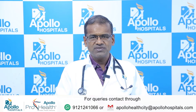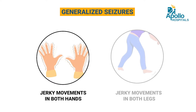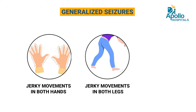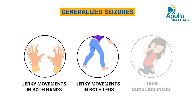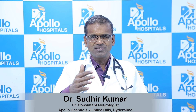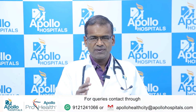The second type is called generalized seizures, where the jerking or twitching movements affect both sides of the body — both hands and both legs may be jerking. Most importantly, the patient loses consciousness. These symptoms last for two to three minutes or a few seconds, and then the patient regains consciousness.